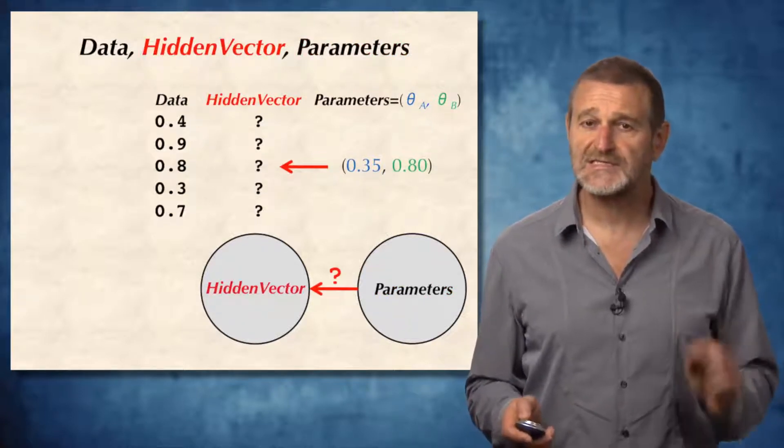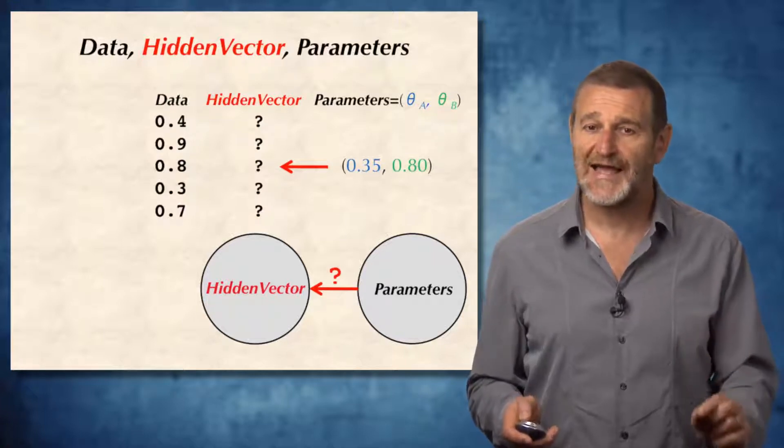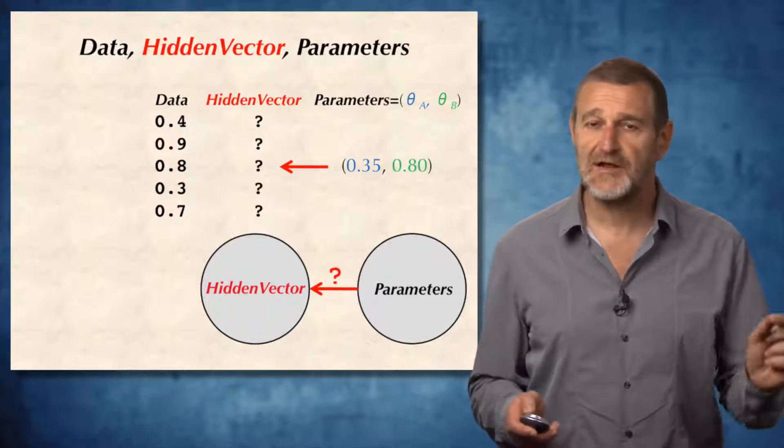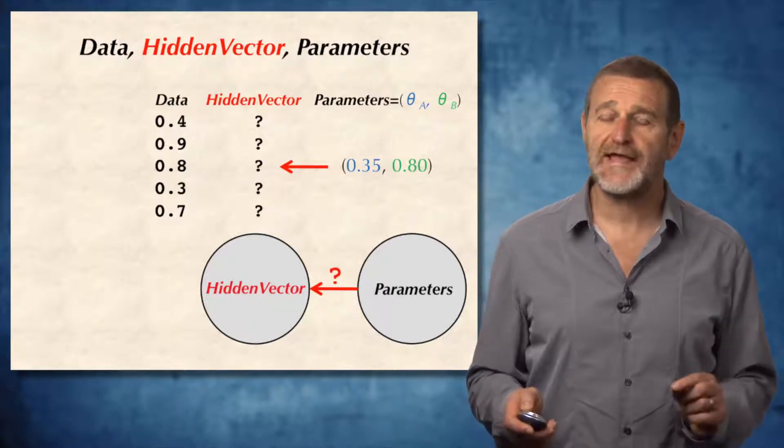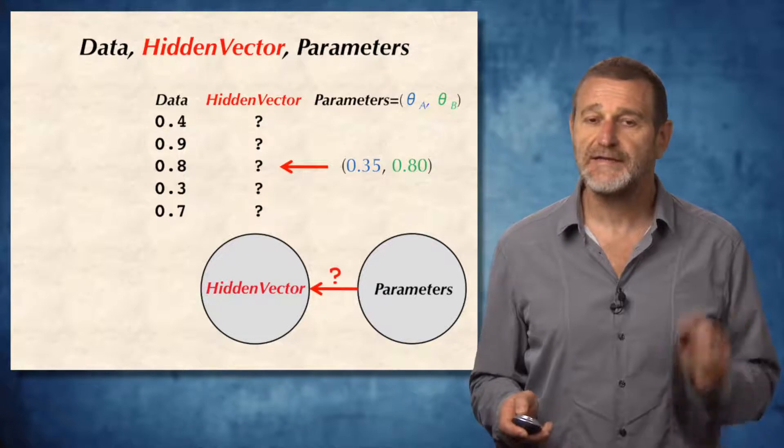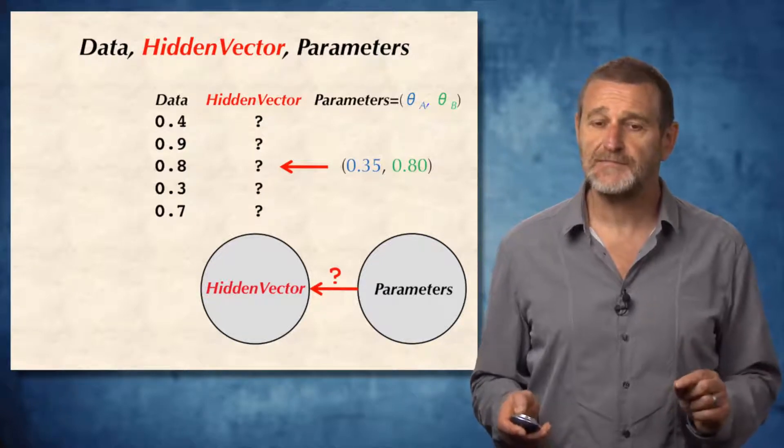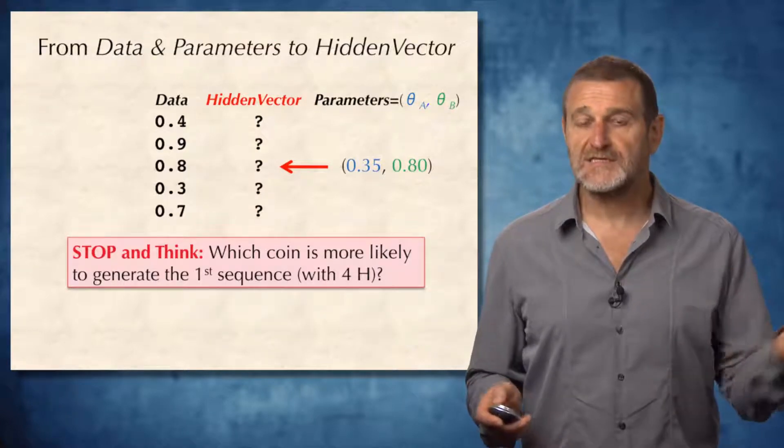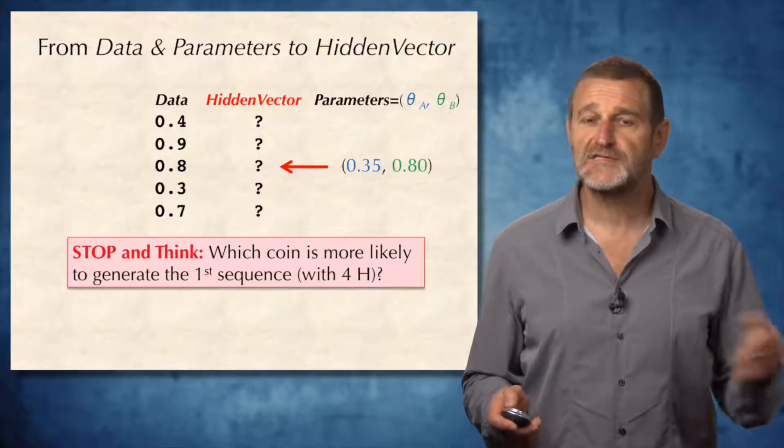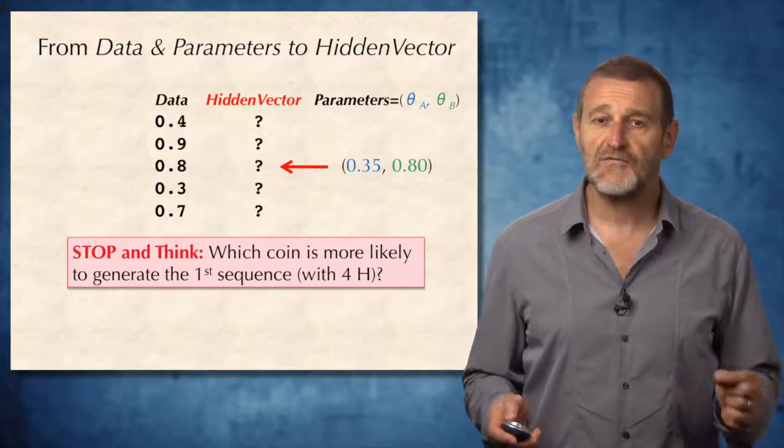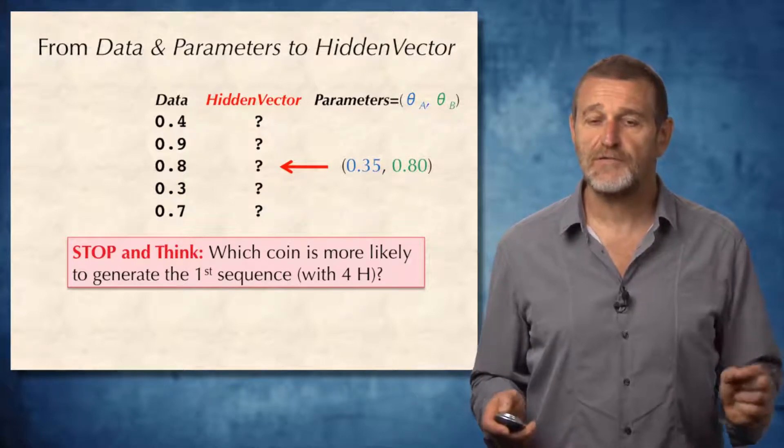Let's imagine for a second that parameters are actually known. Let's start from this example. The parameters are 0.35 for the blue coin, 0.80 for the green coin. Can we derive the hidden vector? Let's say what is the most likely coin to generate the first sequence of flip, where the fraction of heads is 0.4?